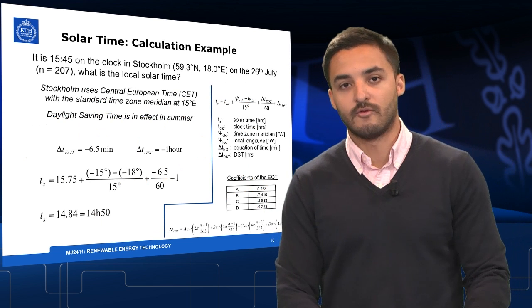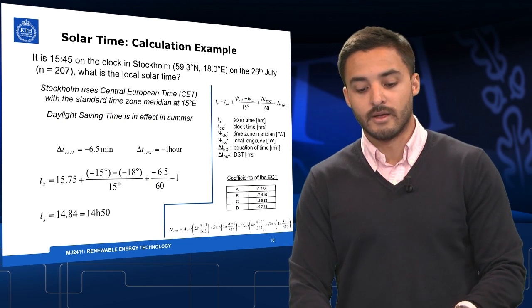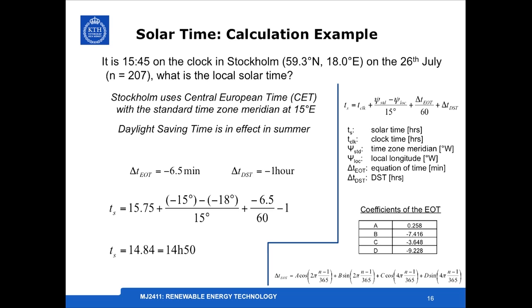Now to put this into practice, we can have a very simple example in which by knowing the clock time, we are asked what's the solar time. If it is 15:45 on the clock in Stockholm (59.3°N, 18.0°E) on the 26th of July (n = 207), what is the local solar time?